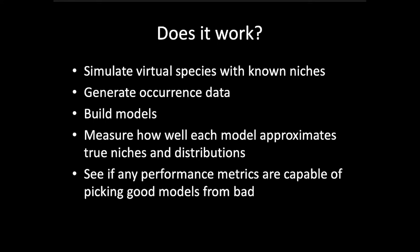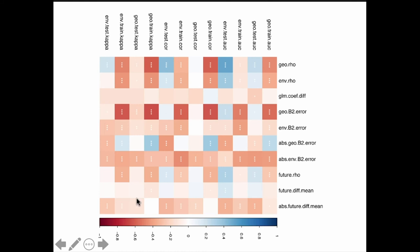So the question is whether this approach is actually useful. What we did is simulate virtual species with known niches, generate artificial occurrence data, build models, and measure how well each model approximates the true niche and distribution of the simulated species. We then looked at whether geographic or environment space performance metrics are actually capable of picking good models from bad ones. What we're finding is that some metrics actually work better to pick good models in environment space than in geographic space, depending on what model performance you want.